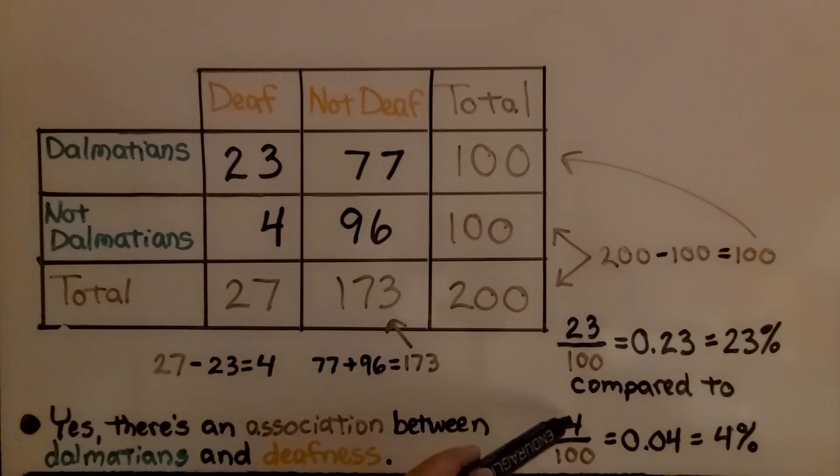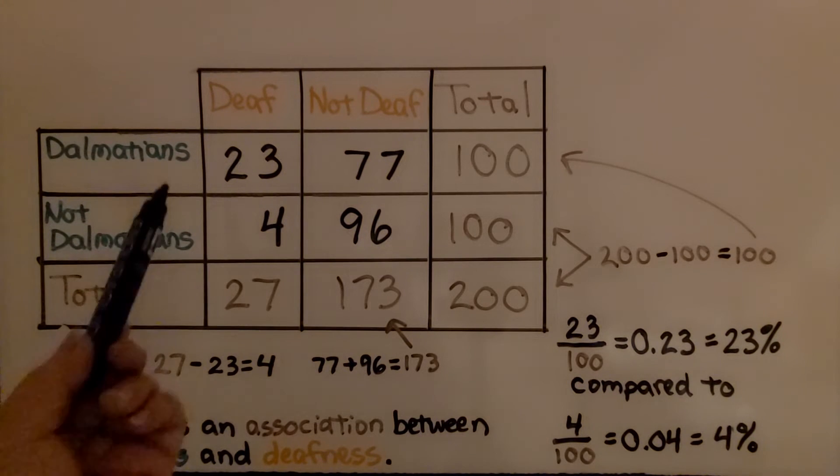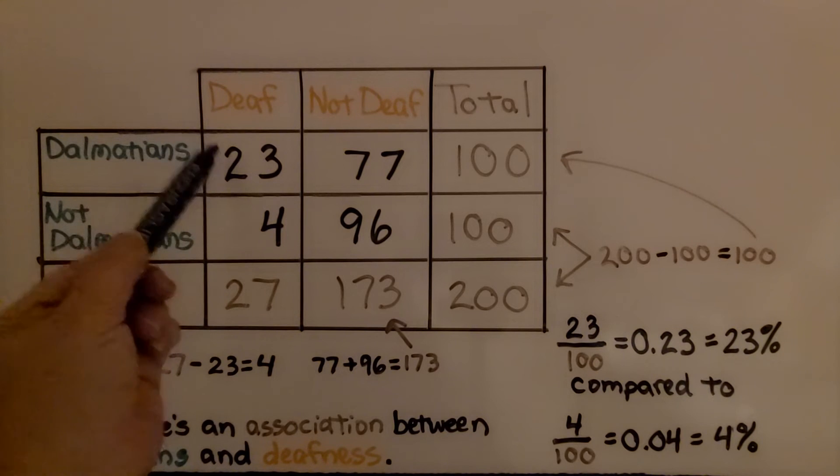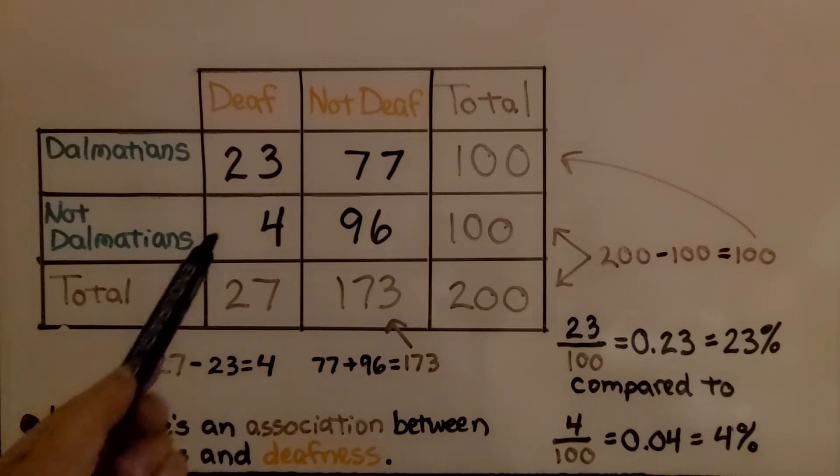which is only 4%, we see that if it's a Dalmatian, there's more association with being deaf than not Dalmatian. So yes, there is an association here between Dalmatians and deafness.